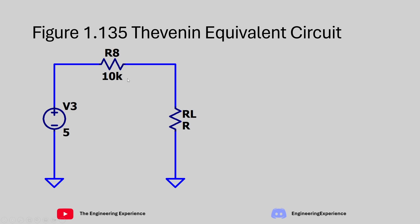On the screen now, I have displayed the Thevenin equivalent circuit that we calculated for figure 1.135. We have a voltage source of 5 volts with a series 10 kΩ resistor. So essentially, we can represent a 0.5 milliamp current source and two 10k resistors with this setup. No matter what load, we should get a similar result. The voltage source is 5 volts and the series resistance is 10 kΩ. Keep this in mind for the second part of the question.